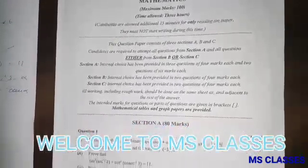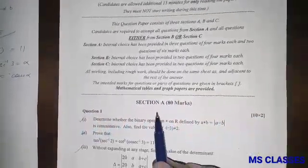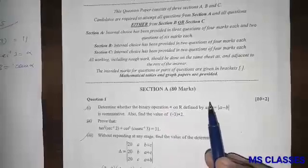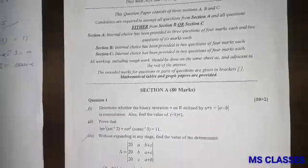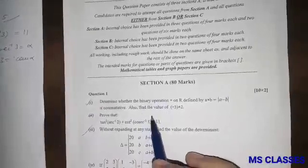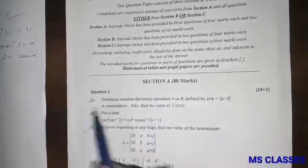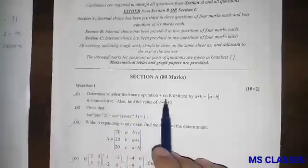Hello students, welcome to MS Classes. Today we will solve ISC 2020 Maths paper. I'll solve Question 1, all 10 parts of Section A in this video. Let's start with the first part: determine whether the binary operation on R defined by a into b equals mod of a minus b is commutative.